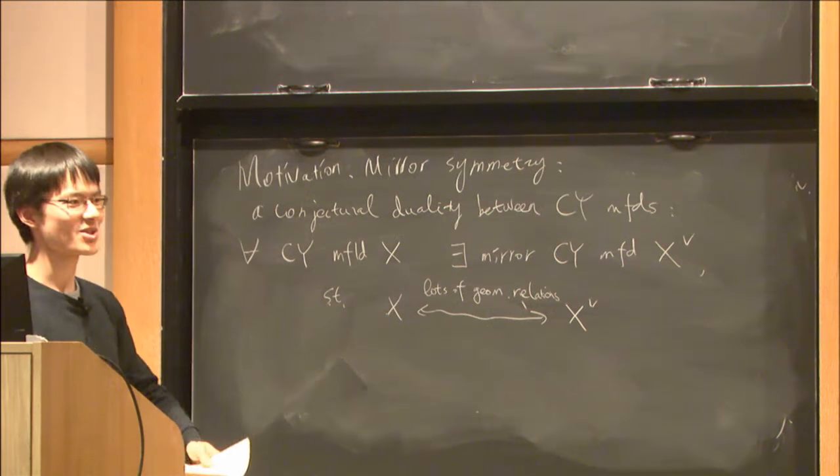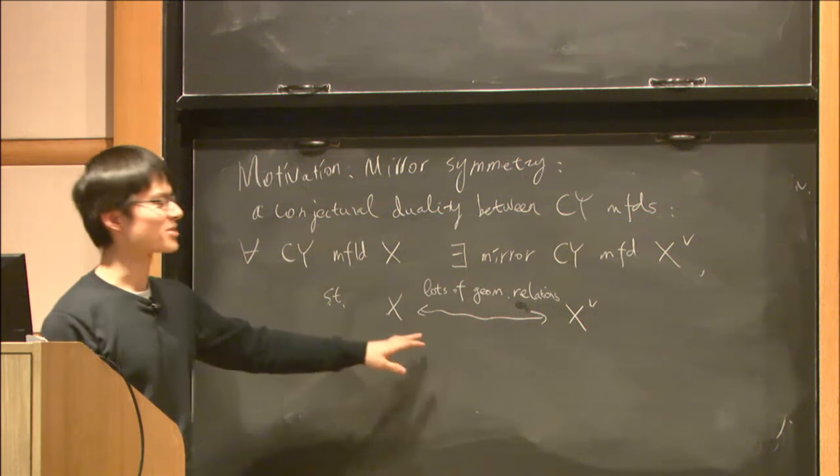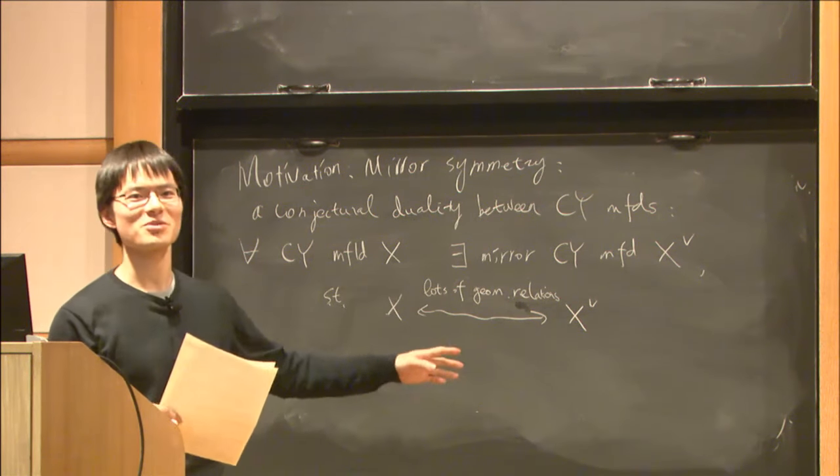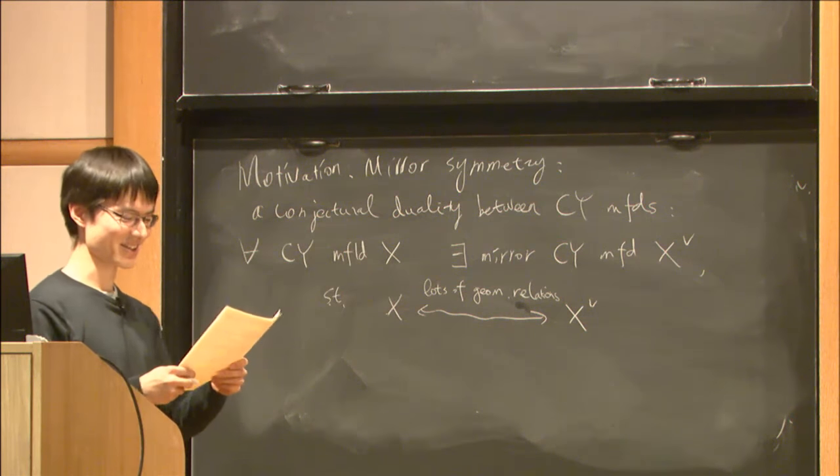As you saw from Tim's talk, there are relations between Hodge numbers, Gromov-Witten invariants, derived categories, and so on.